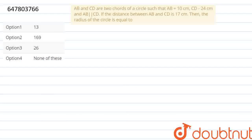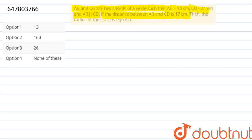We are going to solve this question. AB and CD are two chords of a circle such that AB equals 10 cm, CD equals 24 cm, and AB and CD are parallel. If the distance between AB and CD is 17 cm, then the radius of this circle is equal to — so we have to find the radius of this circle.